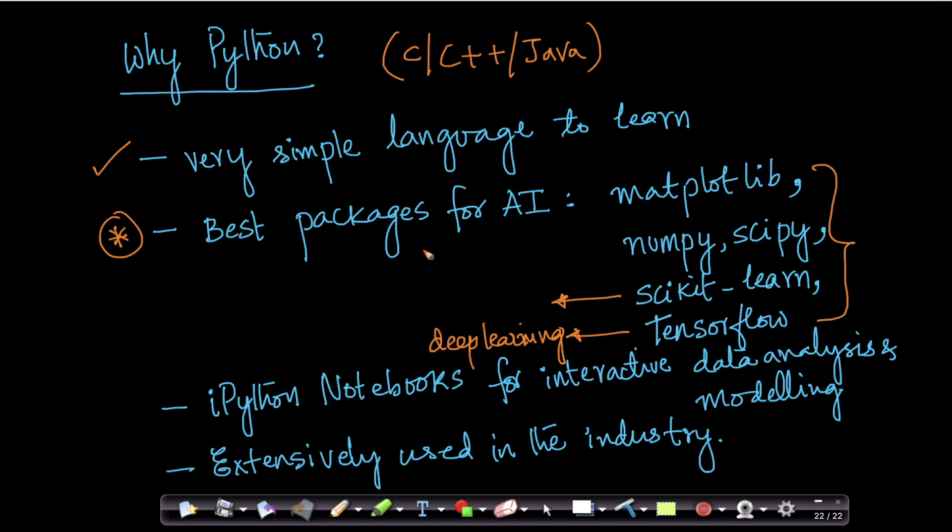Most of the important algorithms that you come across, you either find it in Scikit-learn or TensorFlow, or you'll find some open source code written in Python. And Python is one of the more popular languages for AI and machine learning. So it's very easy to get code for a new algorithm in Python.